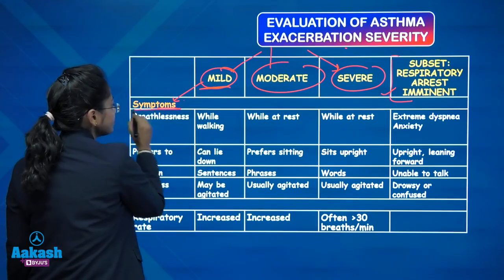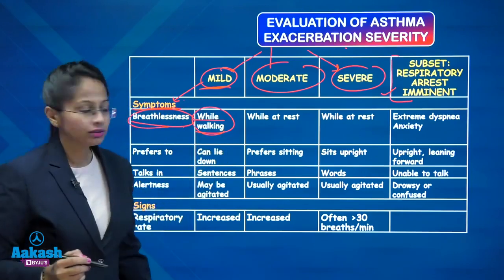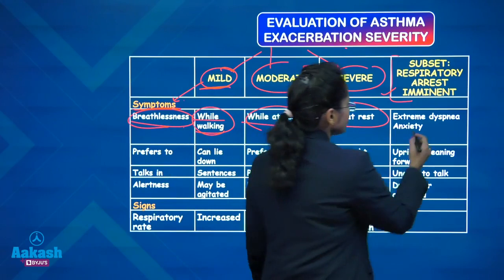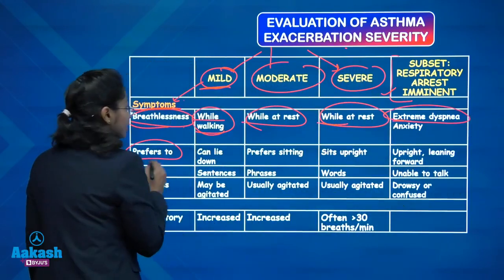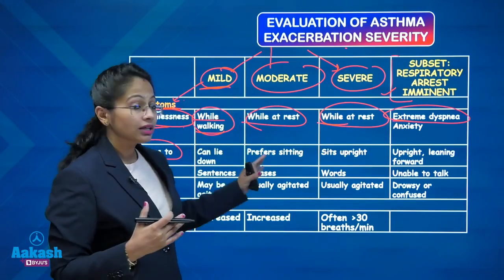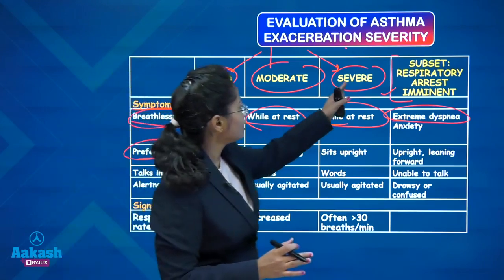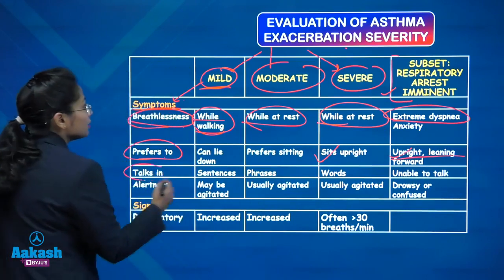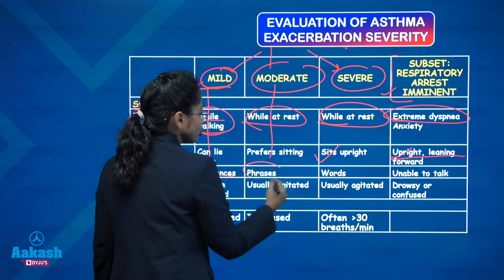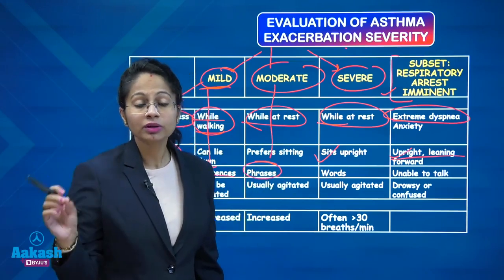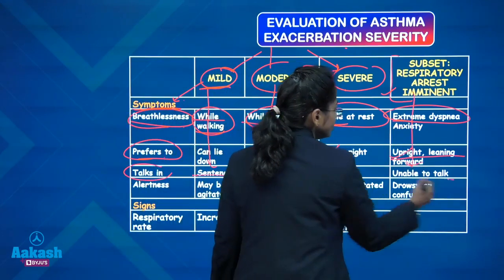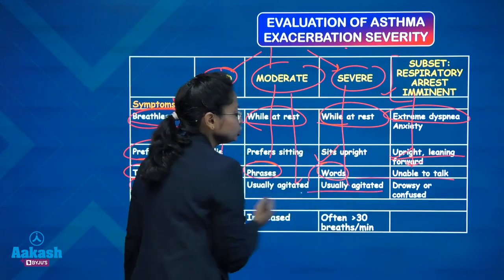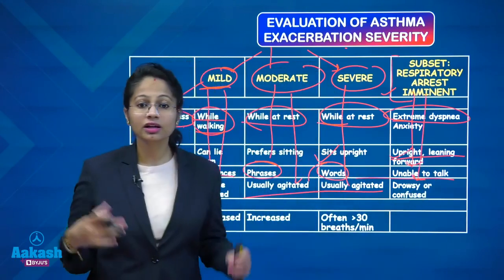In mild cases, the child can lie down; in moderate, the child prefers to sit; in severe, they sit upright; and in impending respiratory failure, the child is upright or leaning forward. A mild patient can talk in sentences; moderate talks in phrases; severe can only say words; and in impending respiratory failure, the child is unable to talk. Regarding alertness: mild may be agitated, moderate and severe are usually agitated and irritable, while in impending respiratory failure the child is drowsy.